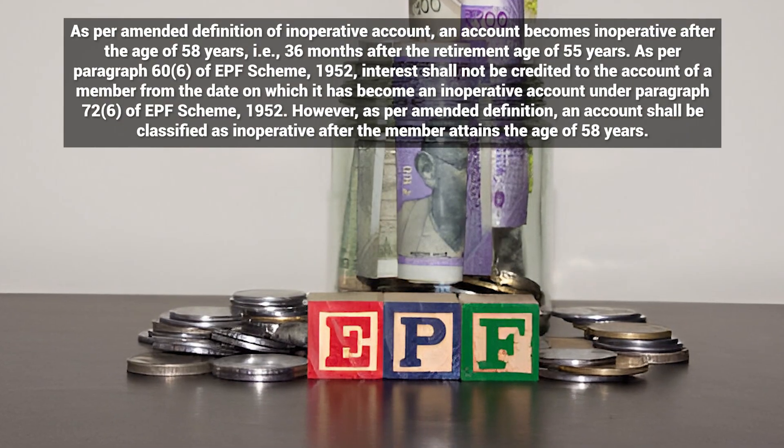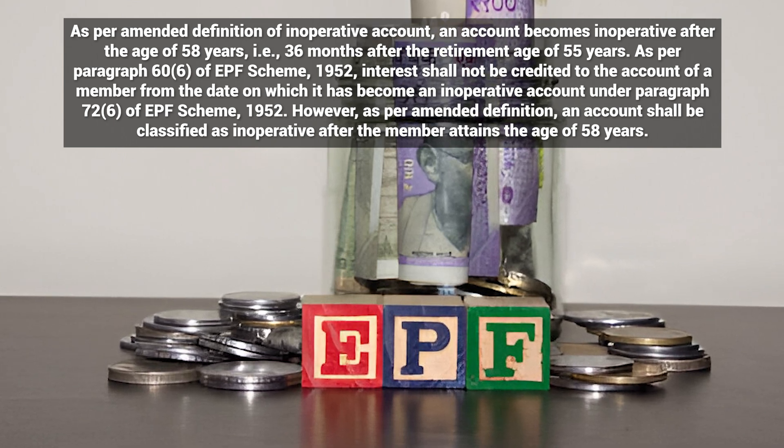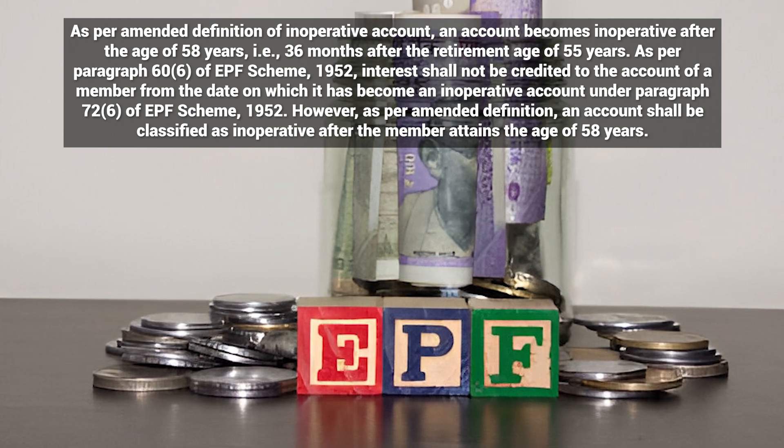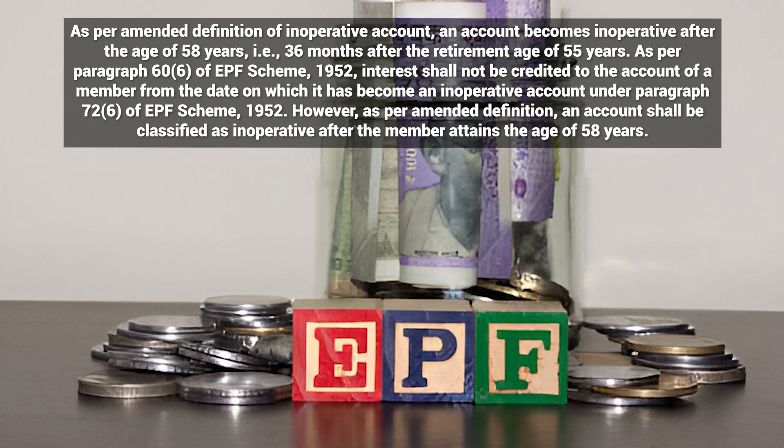The first condition where your account will become inoperative is after the age of 58 years — it will become inoperative, meaning you will not get any kind of interest on the PF balance amount. The main rule is after 36 months from the completion of the retirement age, that is 55 years, you are not eligible for any kind of interest on the balance amount. So if you have crossed 58 years of age, don't wait — withdraw your PF amount.